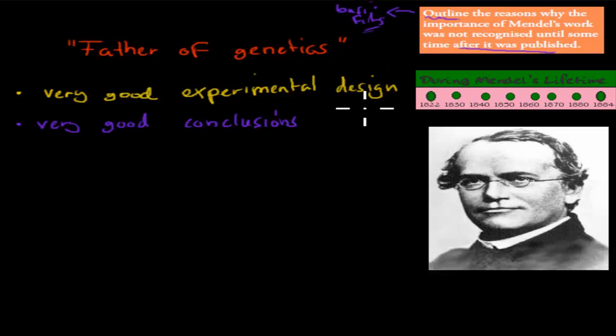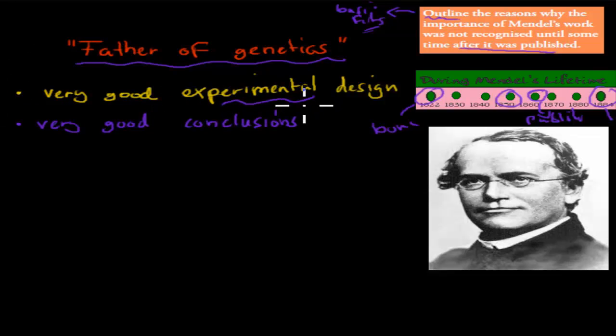Before I start, I'll quickly go over his actual life. So he was born in 1822, and he died in 1884. He did his experiments in the 50s, and he published his experiments in the 60s. And nowadays, he's actually known as, his nickname is the father of genetics, because his actual work laid the ground foundation for genetics and how genetics worked. And obviously we learn about him in school and at university, he's a very important person. And he's known for his very good experimental design, his consistency and his dedication, and his very good conclusion.